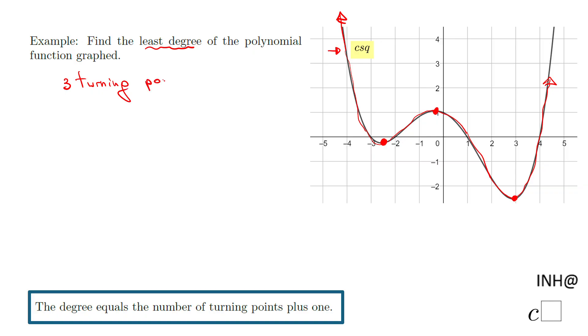So the degree, the least degree of this polynomial function is three plus one, that will be four. Four. The least degree is four.